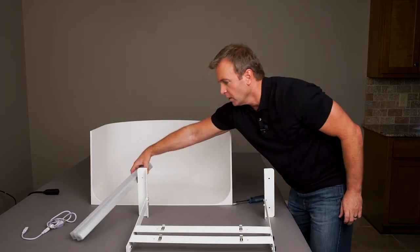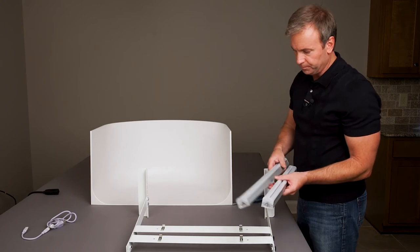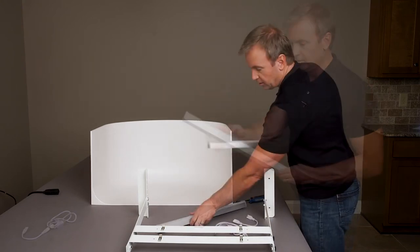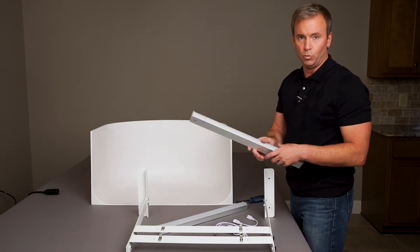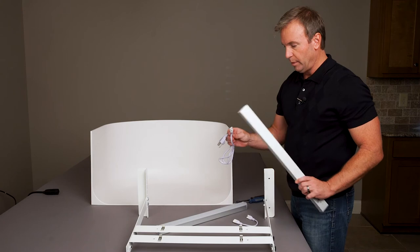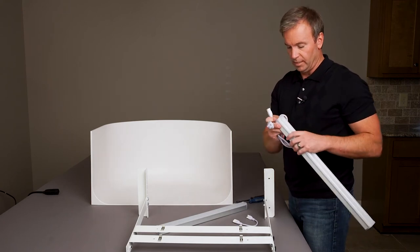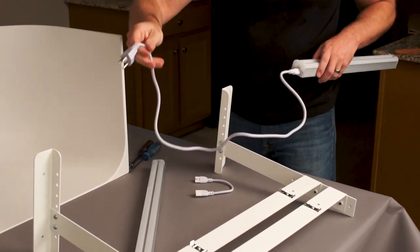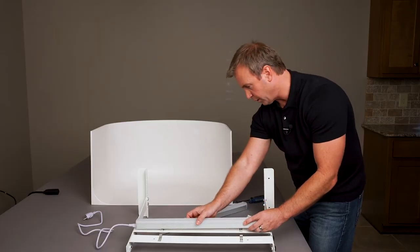So, you have two of these LED lights. They're identical. But they have two different connectors on the end. Basically, before you clip it on here, you want to decide where your power source is. Mine is over there. So, I want the power cord to connect on this side. So, I'm going to go ahead and plug that in. And make sure that when I install it, it's on the right side.